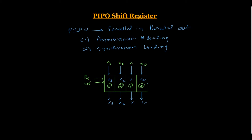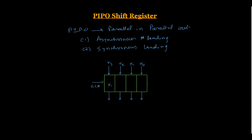In synchronous loading, we have to apply the clock pulse. Here our data x3, x2, x1, and x0 — when we apply the clock pulse, they are stored in the shift register, and we can read this in a parallel fashion. This is known as a Parallel In, Parallel Out shift register. In synchronous loading we use only a clock pulse to transfer our 4-bit input data to the output.